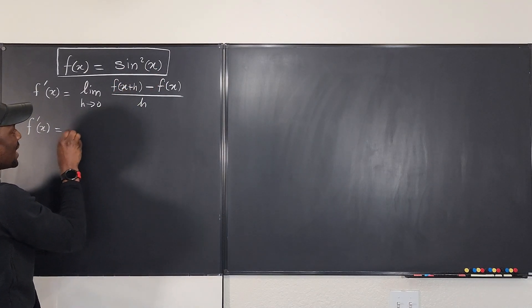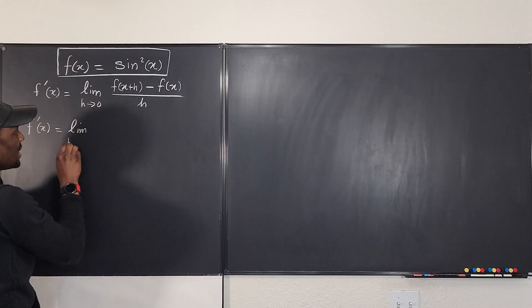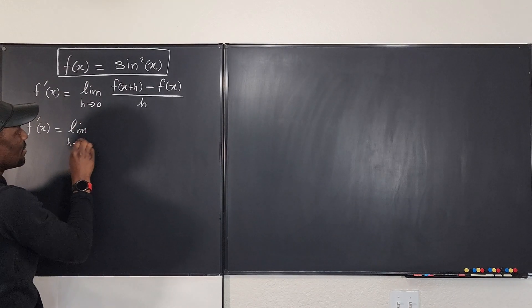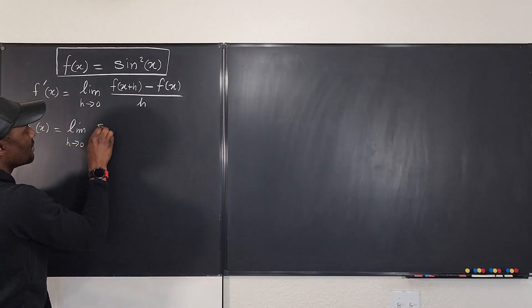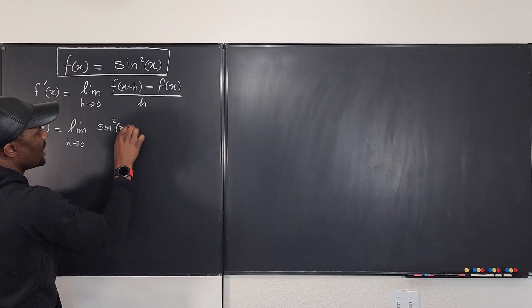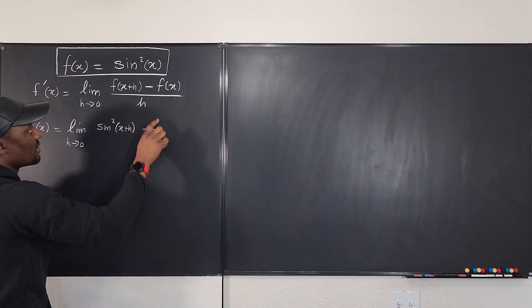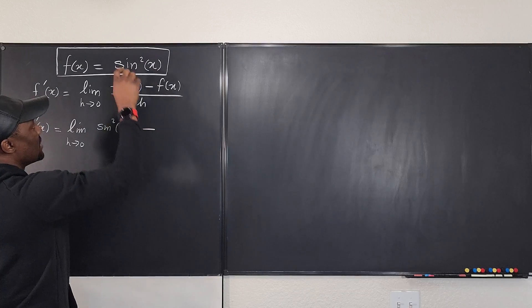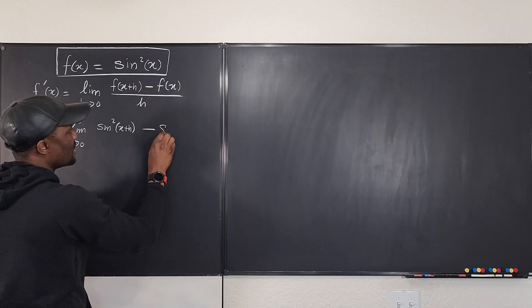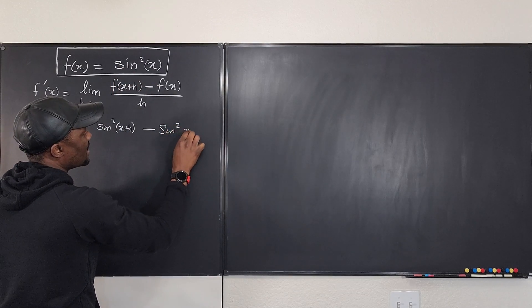We're going to write the limit as h goes to 0 of sine squared of x plus h, minus the function itself, which is sine squared x, all divided by h.